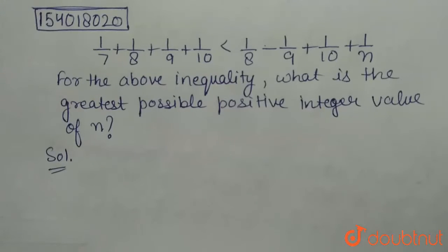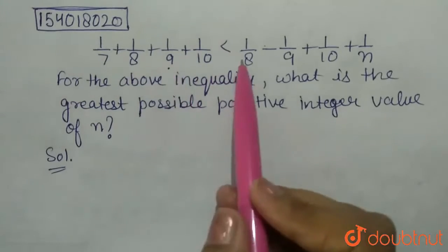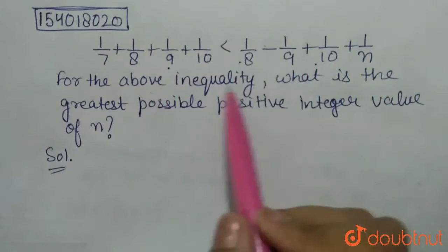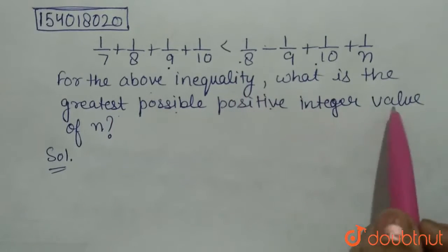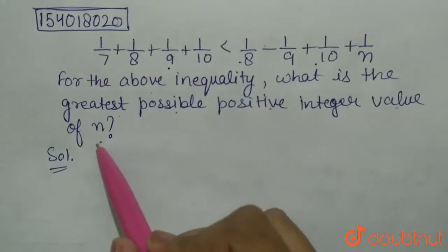The question given here is: we have been given an inequality, and for this inequality, we need to find the greatest possible positive integer value of n.